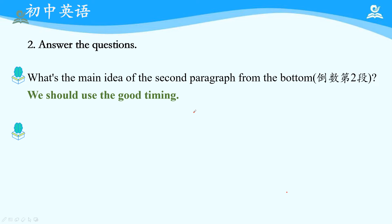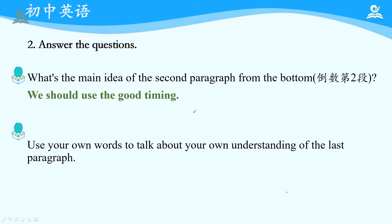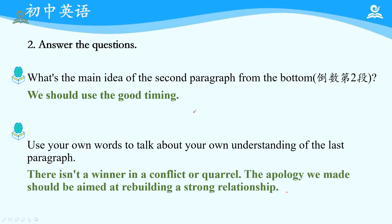最后一个题目：Use your own words to talk about your own understanding of the last paragraph. 最后一段只有一句话：Remember, it's not about who won or lost, it's about keeping the strong relationship. 这是作者整篇文章的指导理念，all the strategies offered started from this theory. How do you understand it? When we apologize, we should focus on rebuilding the strong relationship rather than determining who is the winner or loser. Because both parties are losers until the conflict can be solved in a proper way.